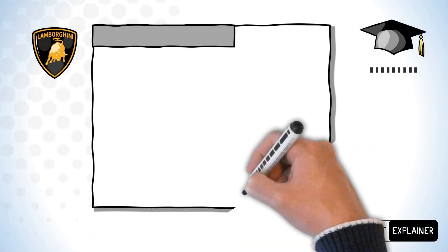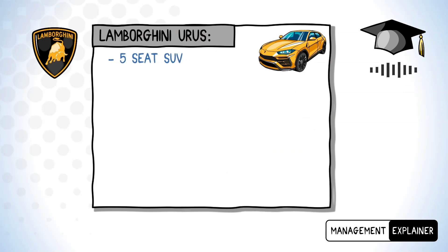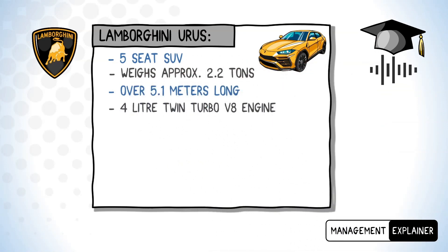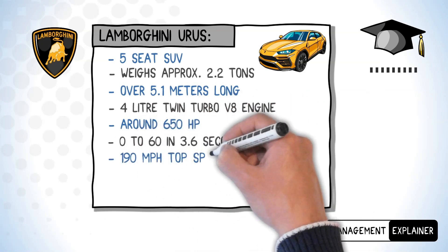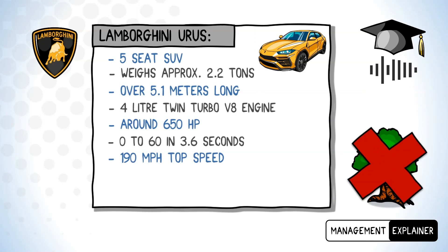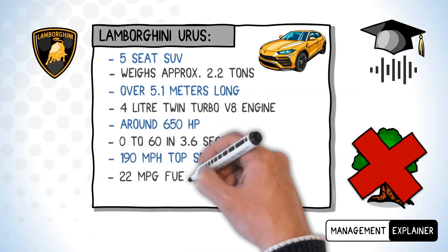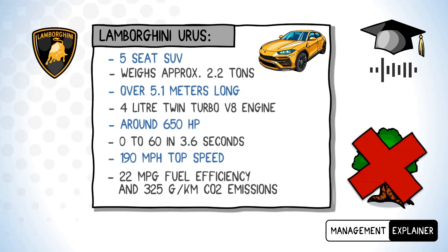Let's look at the specs of the Lambo first. The Urus is quite a beast. It's a five-seat SUV with four doors, weighs a whopping 2.2 tons and is over 5.1 meters long. It's got a four-liter twin-turbo V8 engine that makes around 650 horsepower. It accelerates to 60 in only 3.6 seconds and reaches a 190 mile per hour top speed. Its fuel economy and CO2 emissions are terrible: 22 miles per UK gallon and CO2 emissions of 325 grams per kilometer.